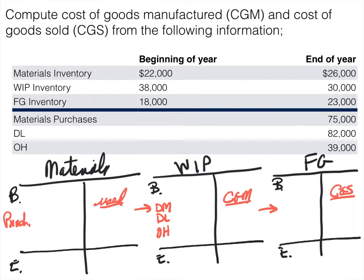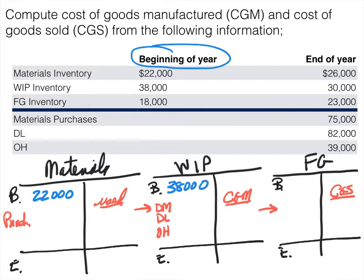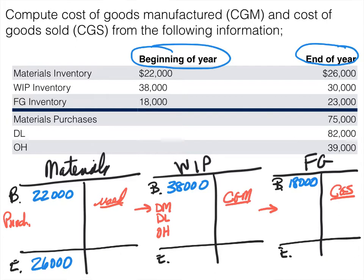It doesn't look like in this problem we have freight in, but we have to be cognizant of that. Now I'll fill in the information given. Beginning materials are $22,000, beginning work in process is $38,000, and beginning finished goods is $18,000. The ending balances: materials $26,000, work in process $30,000, and finished goods $23,000.